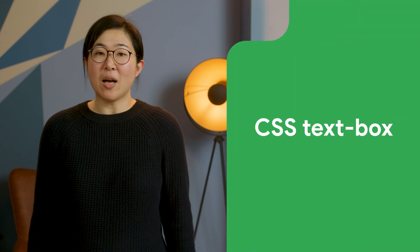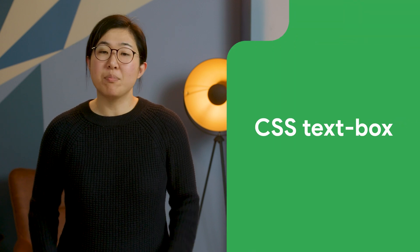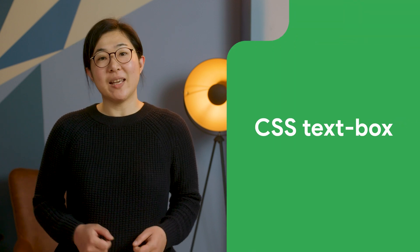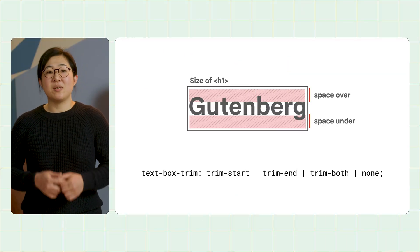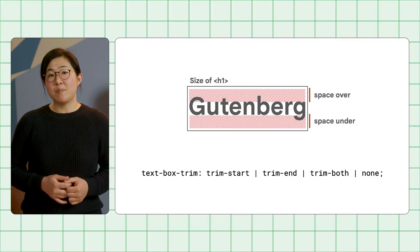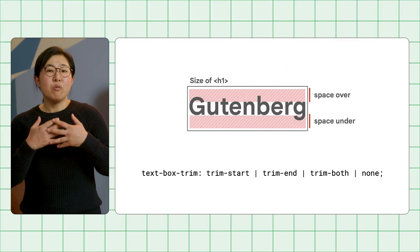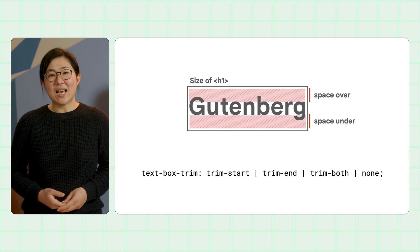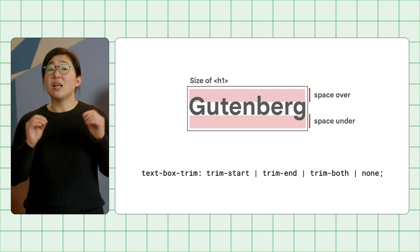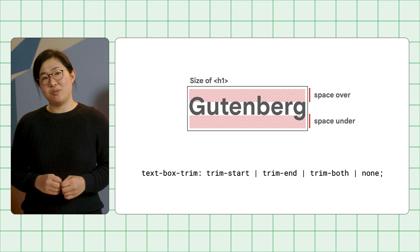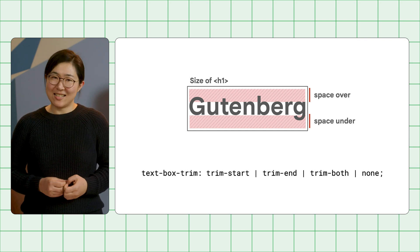CSS TextBox lets you control vertical spacing precisely by using the font metrics. Every font produces a different amount of space above and below the characters, which determines the size of the element. It has been impossible to control the size of these spaces until now.